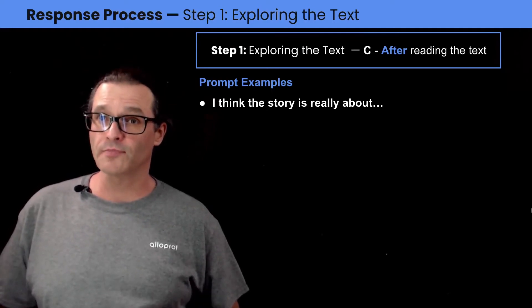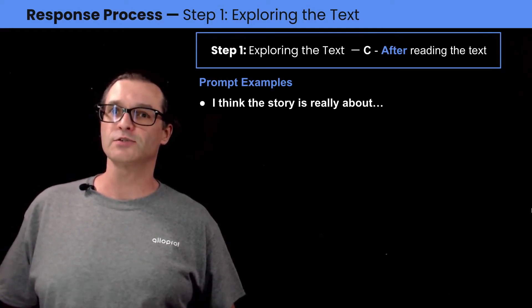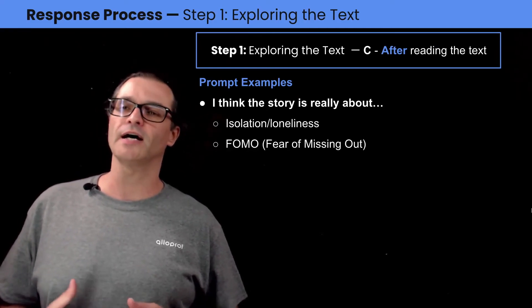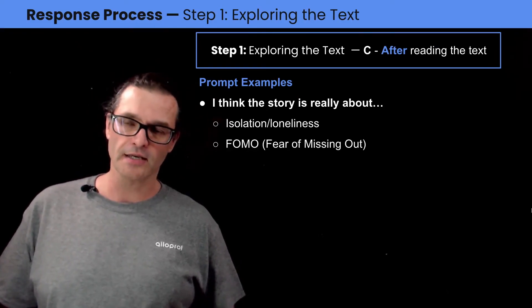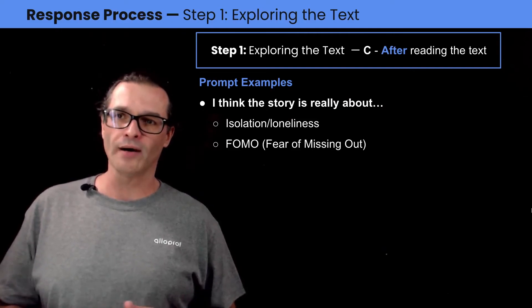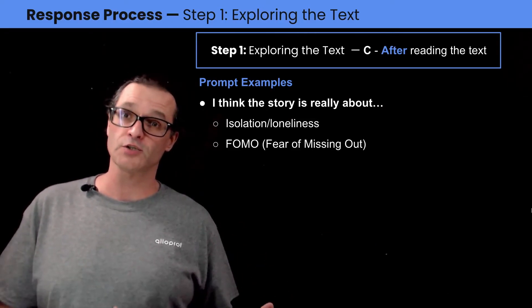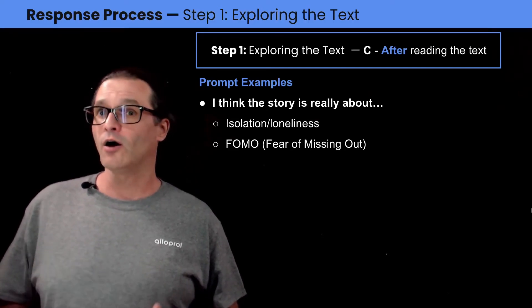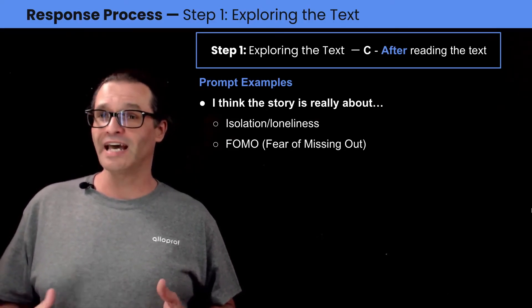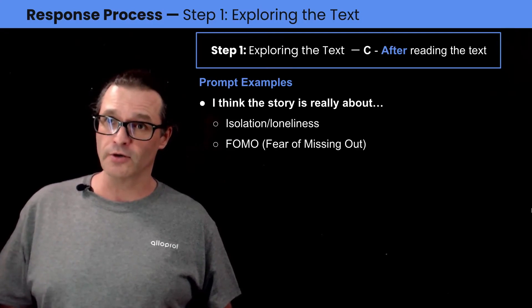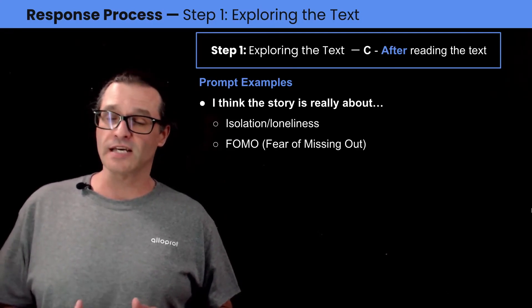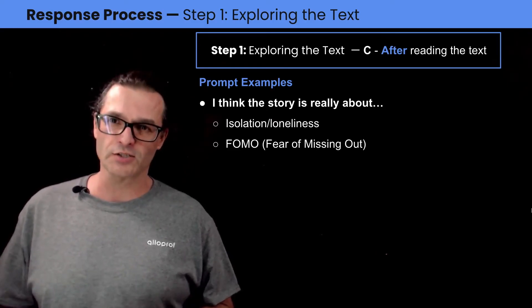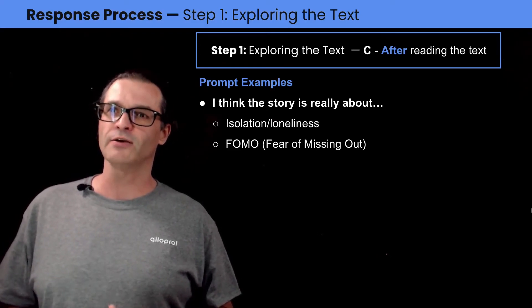The second prompt example is, I think the story is really about. Now, I think this story is really about isolation and loneliness. Astronaut Bob is all by himself. He has no communication with the outside world, so that makes him very isolated. Also, the fact that all he has to talk to is this computer who refuses to use astronaut Bob's real name. It prevents a real connection, so it makes astronaut Bob very lonely.